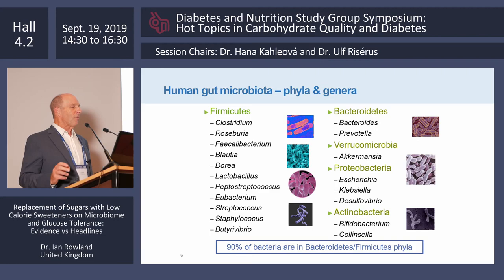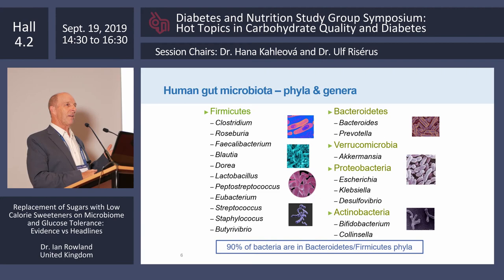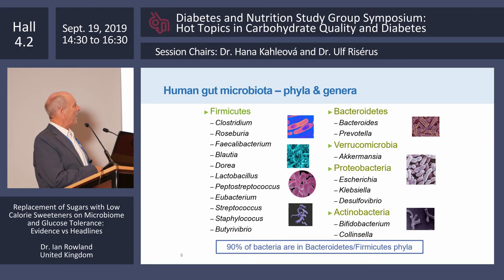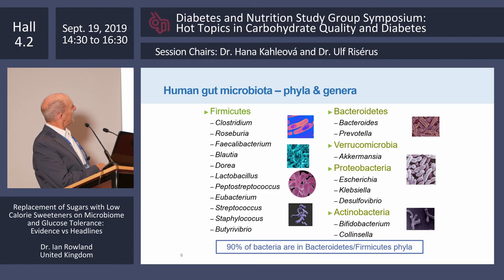The main phyla of bacteria in the gut are the Firmicutes and Bacteroidetes — 90% of gut bacteria fall into these two large groups. There are others, like Verrucomicrobia, which includes an important organism called Akkermansia, and Proteobacteria which includes E. coli. Actinobacteria includes Bifidobacterium, considered a beneficial organism used as a probiotic. Within Firmicutes, Clostridium is probably the main genus. Roseburia and Faecalibacterium are also important — short-chain fatty acid butyrate producers that I'll discuss in relation to diabetes studies.